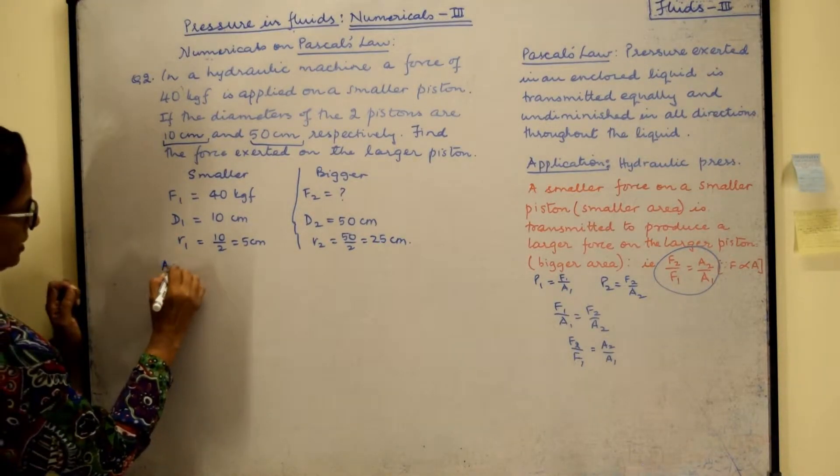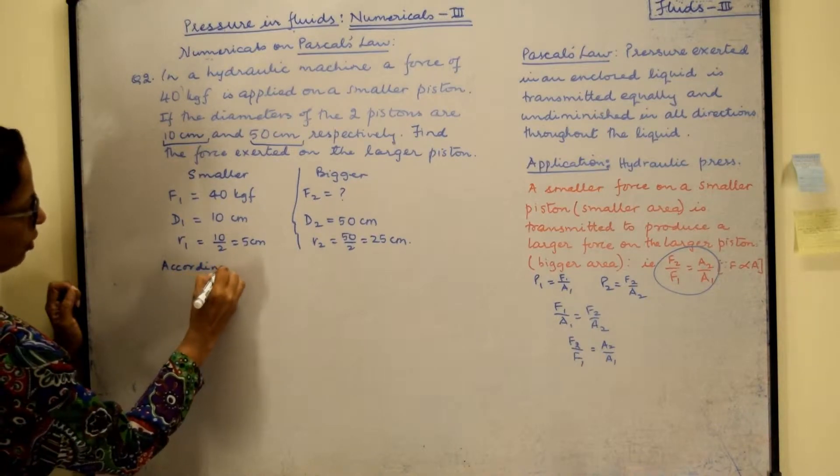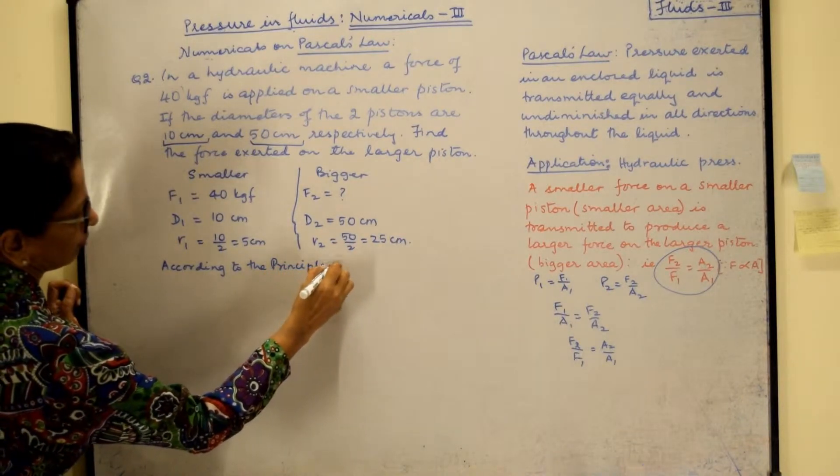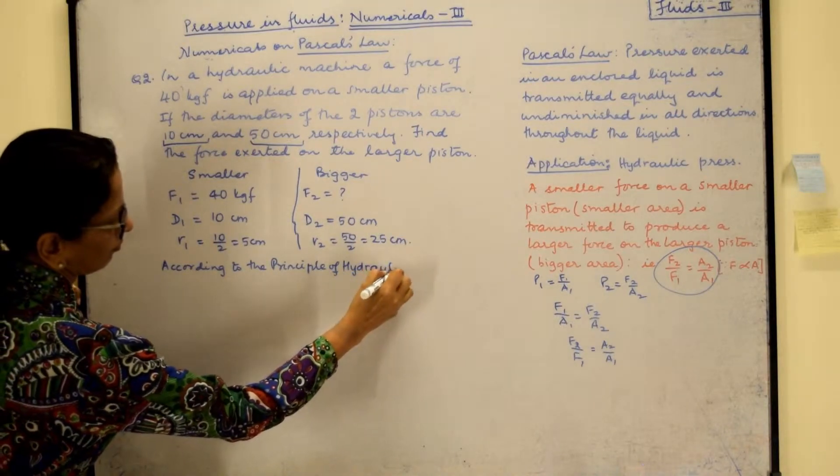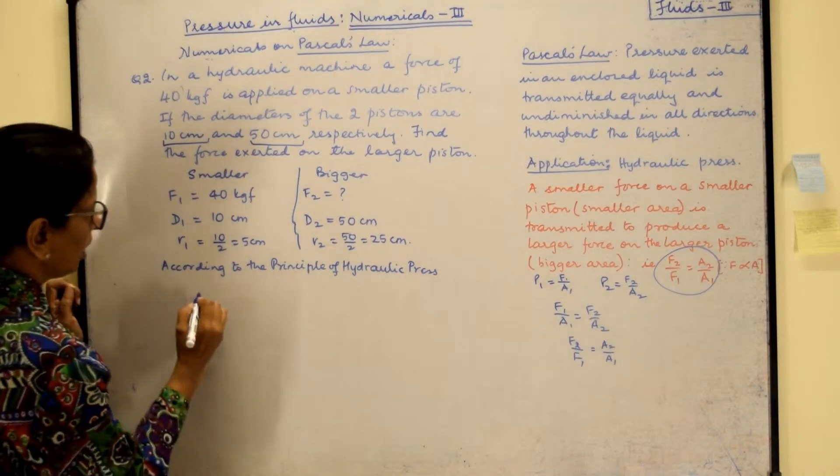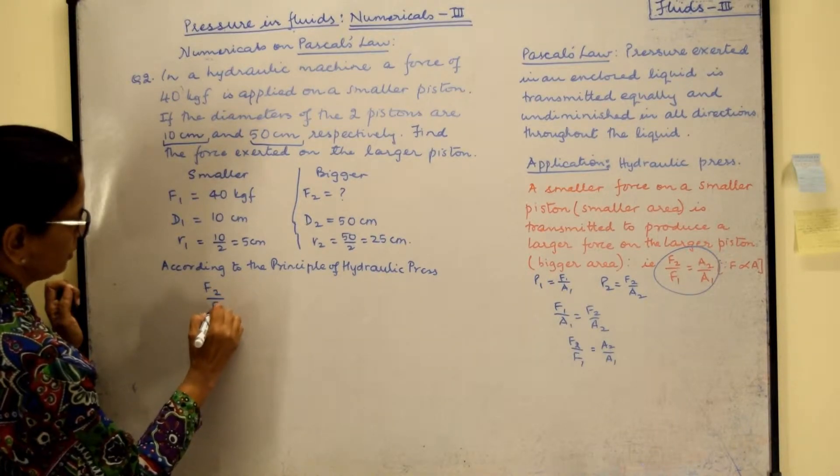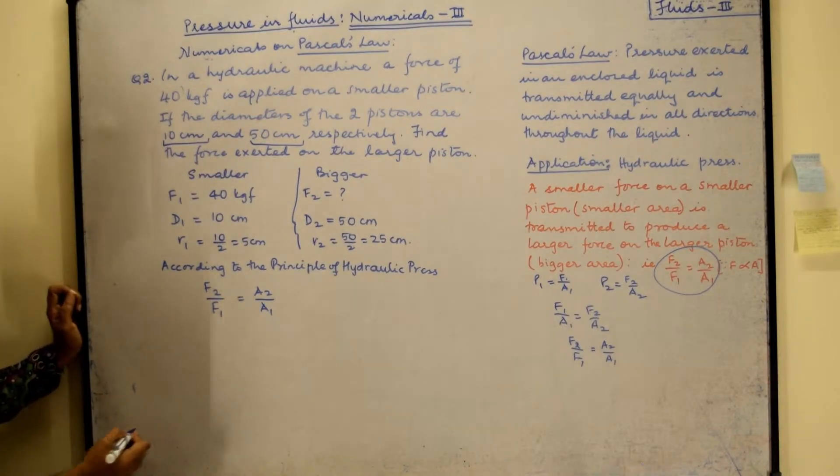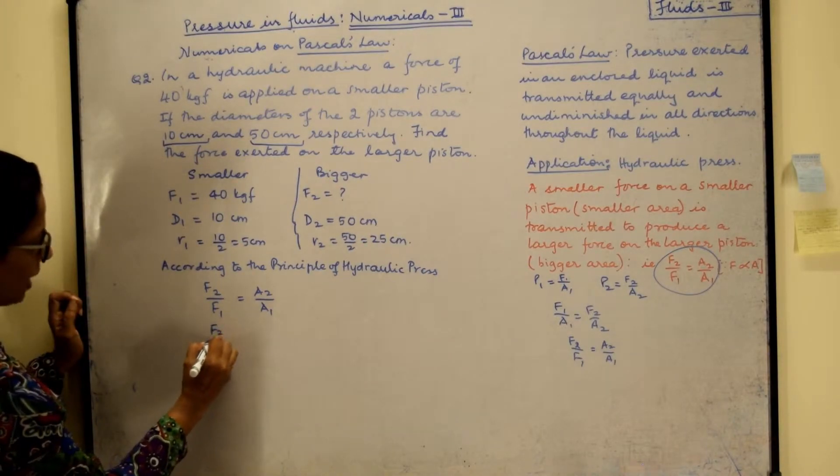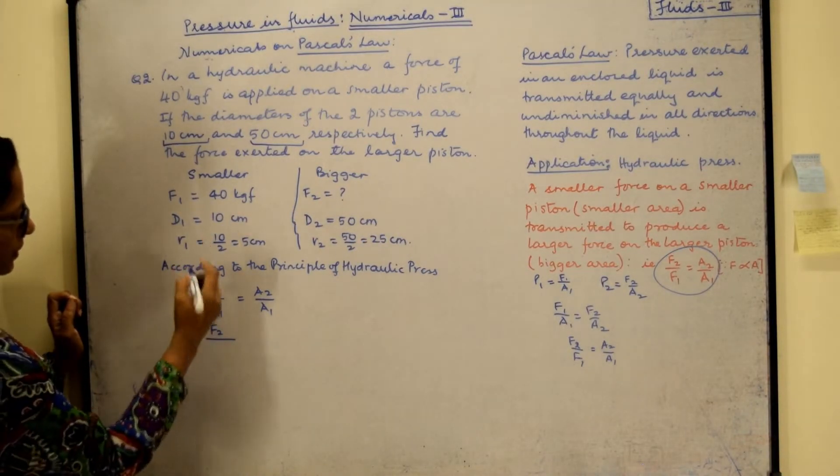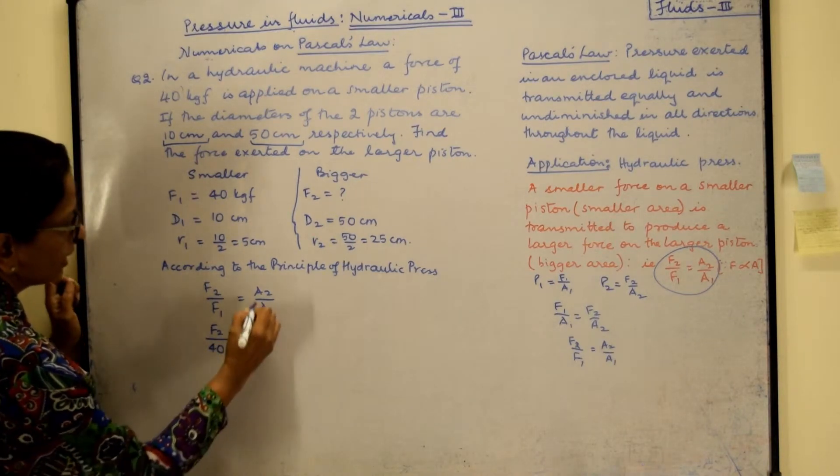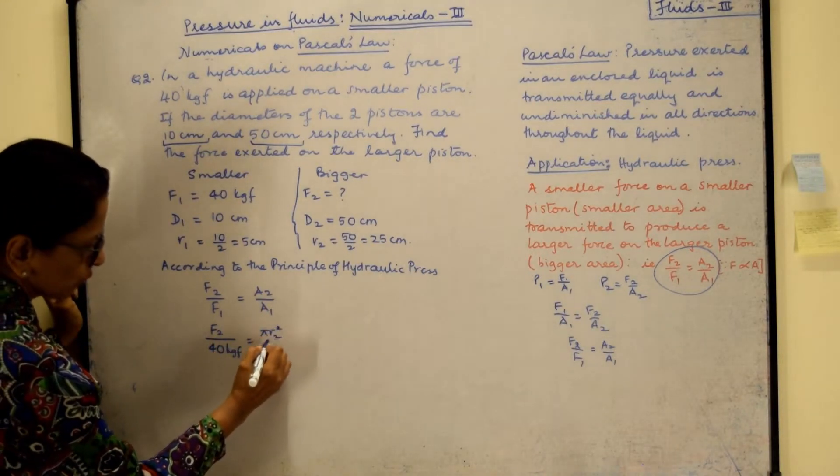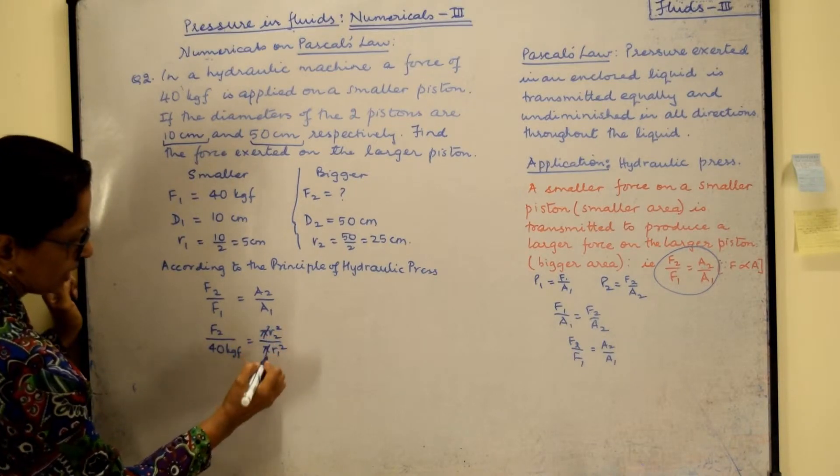So let us write the same statement. By now you should know according to the principle of hydraulic press, what is our formula? F2 upon F1 is equal to A2 upon A1. Now F2 is to be found out. So we will write here F2 as it is. And for F1 we will write 40 kgf. And area of cross section is pi R2 square. So A2 becomes pi R2 square upon pi R1 square. And pi gets cancelled.